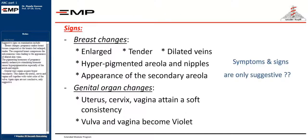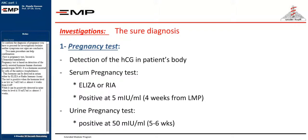Suggestive signs on examination include breast changes. Pregnancy makes breast tissues congested so the breasts feel enlarged and tender. The congested breast compresses the subcutaneous veins leading to the appearance of dilated skin veins. The pigmenting hormones of pregnancy, namely melanocyte-stimulating hormone, causes hyperpigmentation especially of the areola and nipple. Genital tract organs acquire hypervascularity, making the uterus, cervix, and vagina soft, together with violet color of the vulva. Again, signs are not conclusive, only suggestive.